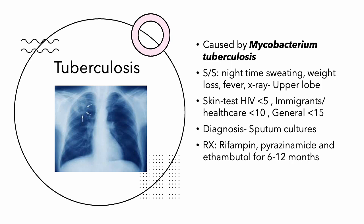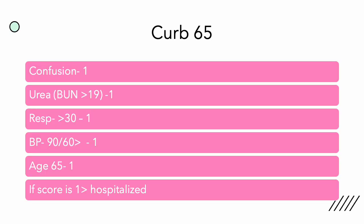The medication of choice for TB is RIPE — actually a combination of medications — and it's going to be a very long haul for patients, six to twelve months. You can also do prophylactic tuberculosis treatment for patients working in high-acuity areas such as hospitals or prisons that are exposed to lots of patients with tuberculosis.